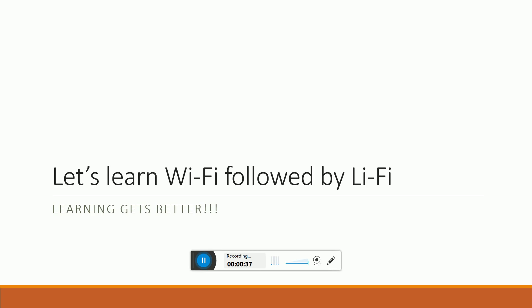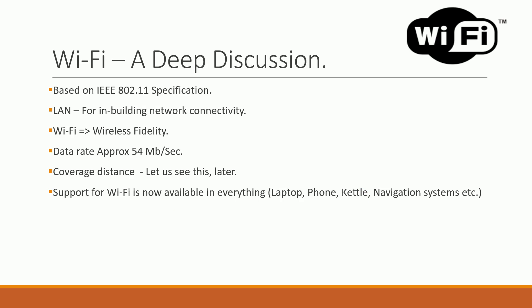So what is Wi-Fi all about? We all have some basic understanding about it, so it becomes easy to teach. It is based on IEEE 802.11 spec. It is a LAN — for in-building network connectivity — so essentially we are talking about local area network, covering a few hundred feet, maybe 250 to 300 feet. Wi-Fi is expanded as Wireless Fidelity, and the data rate is predominantly 54 Mbps.